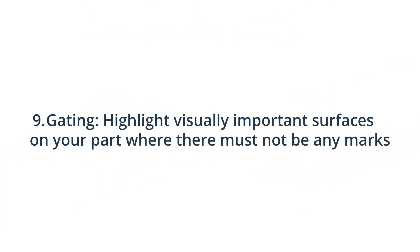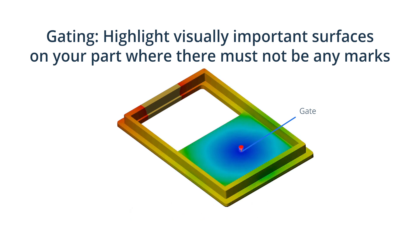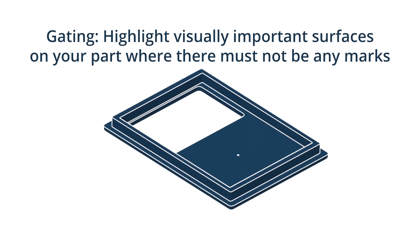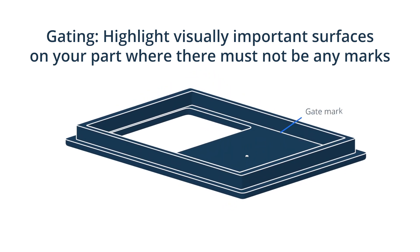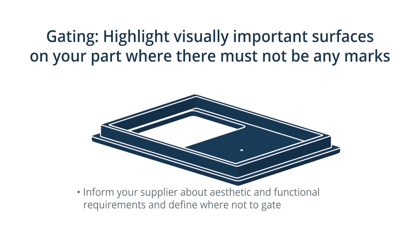And the last tip: highlight visually important surfaces on your part where there must not be any marks. In order to properly manufacture your part using injection moulding, it is important for the manufacturer to understand from the outset what your requirements are in terms of its appearance. One key point for the toolmaker to consider is the gate location. Gates are entry sections through which the molten material enters the mould. The toolmaker has to choose the type of gate and position them strategically to minimise potential quality issues. Gates also leave gate vestige — a visual indication that the part was gated, even if subtle. We recommend letting your supplier know about any aesthetic and functional requirements and define where not to gate.